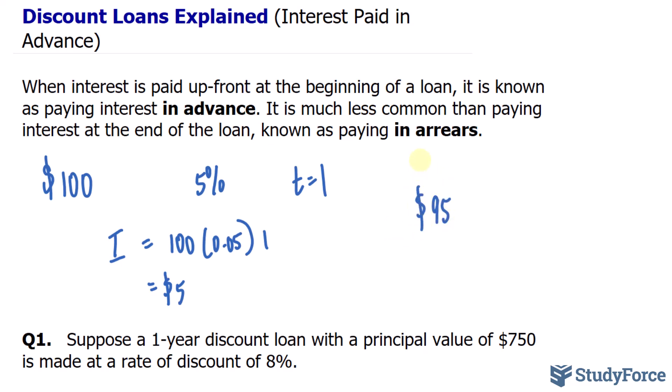Which is found by taking 100, take away the interest that you would have paid a year from now. This is what you would receive on the very first day of the loan, and then after one year, you would have to pay back $100. As you can see, this model of paying interest is very different than paying in arrears. This type of loan is known as a discount loan.